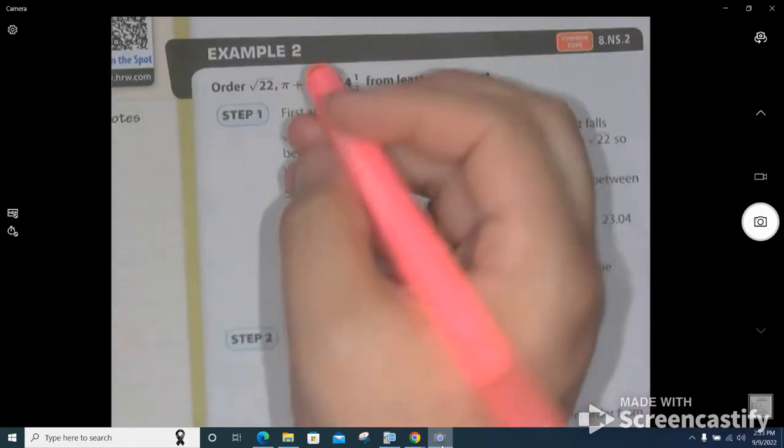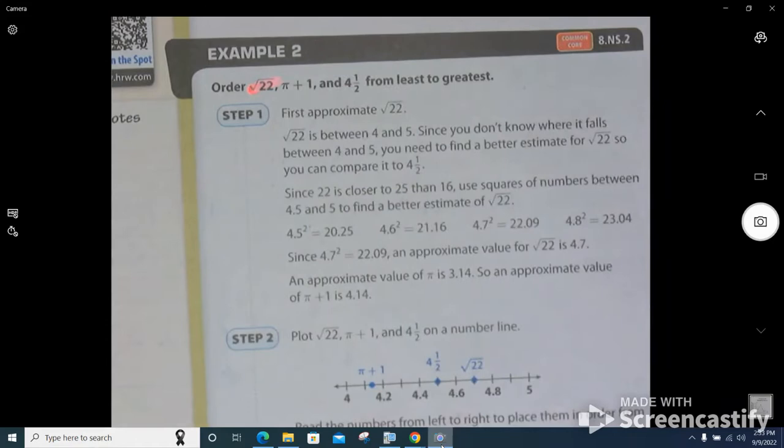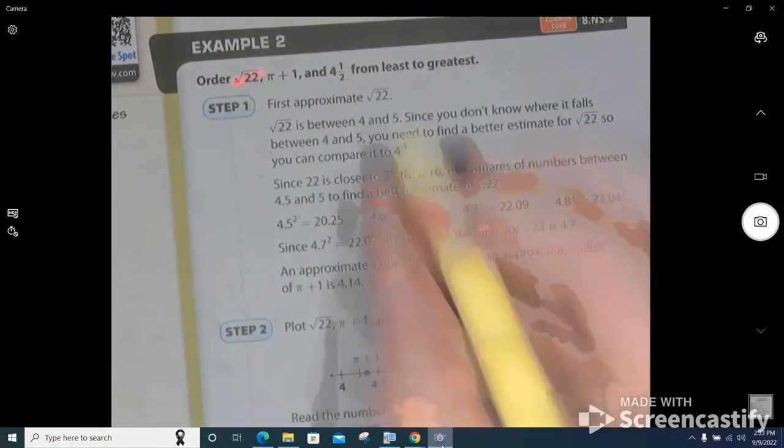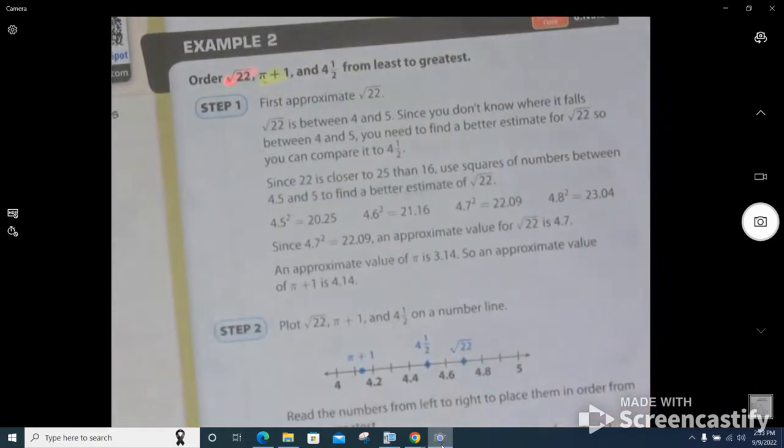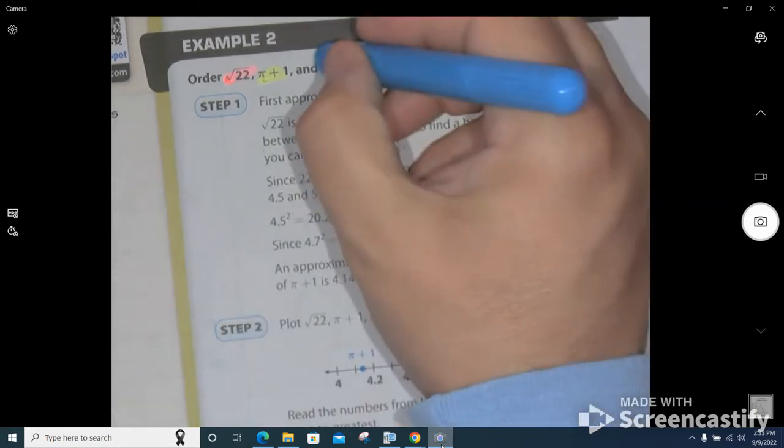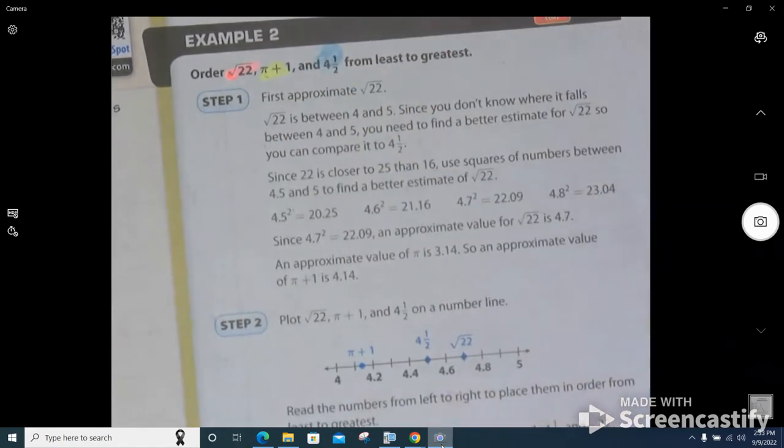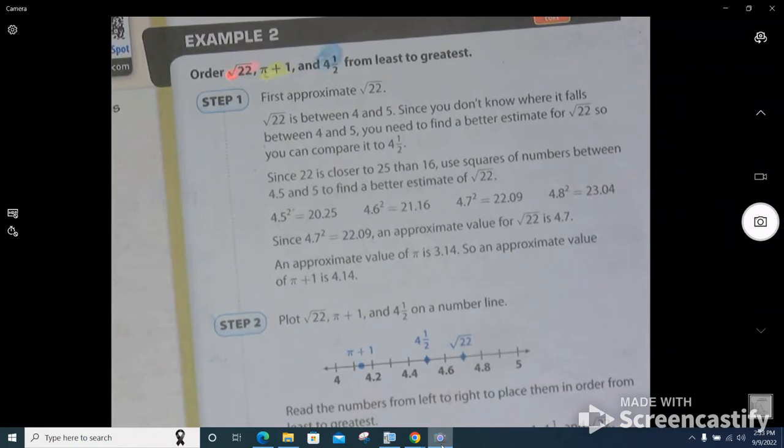So they said order √22, then π plus one is actually a number. You're like, what? Yeah, no, it's real. It's like an actual number, right? And then they also want us to work with this four and a half, right? So if you approximate, I'm going to explain how to approximate it and then we'll just do it in the calculator to see.